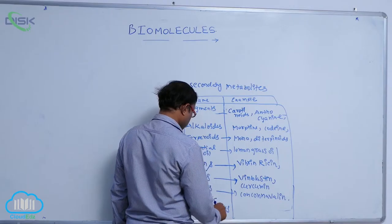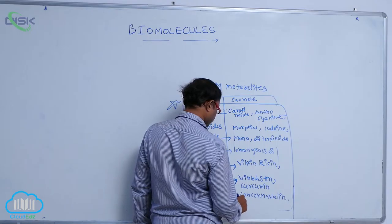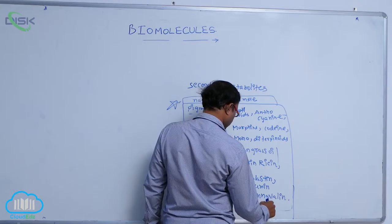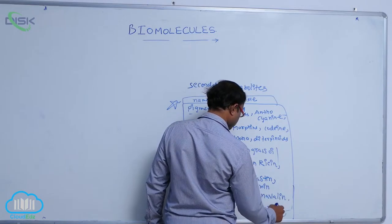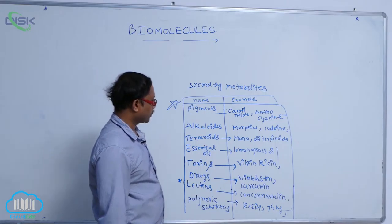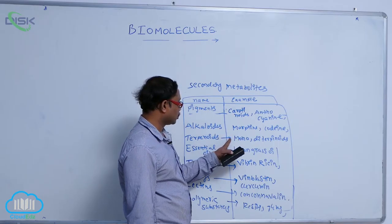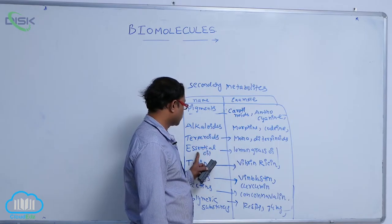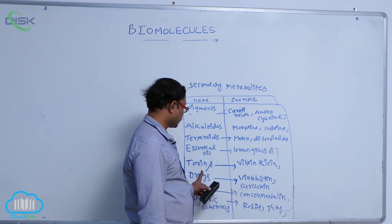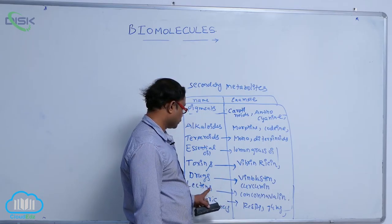Polymeric substances - these polymeric substances are resins and gums. So these are the examples: carotenoids, anthocyanins, alkaloids, morphine, codeine, terpenides, monoterpenides, diterpenides.